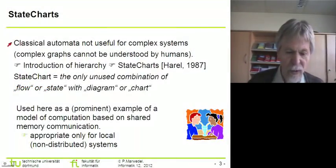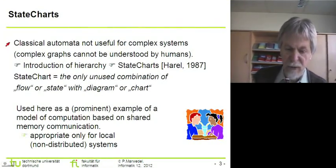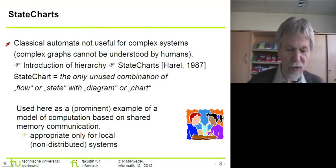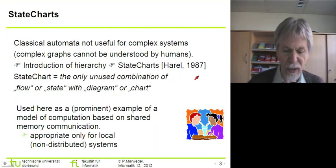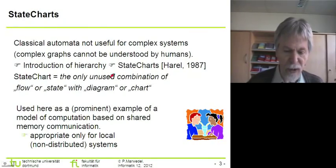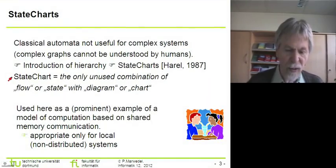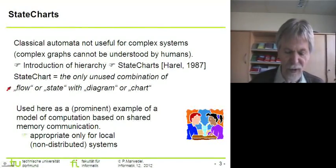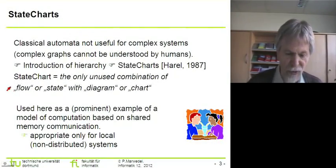State charts is a modeling language which tries to overcome one of the limitations of classical automata — namely, the problem that classical automata don't allow us to use hierarchy. The language was introduced in 1987 by David Harel, who called the resulting language 'state chart.' David explained his choice of the name as follows: state chart was the only unused combination of 'flow' or 'state' with 'diagram' or 'chart.' At the time, flow diagram, flow chart, and state diagram were all already used, so state chart was chosen.